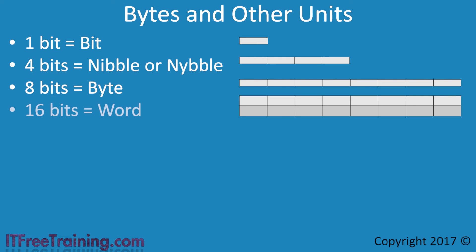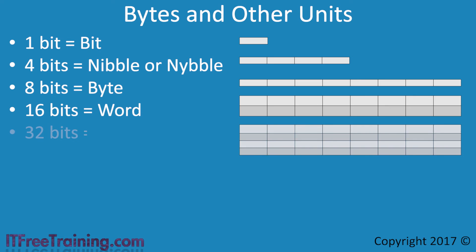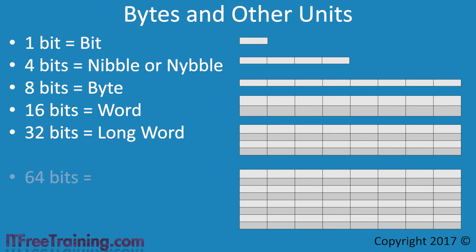The next data type is a word, which is 16 bits or 2 bytes. Sometimes you will see this in networking, but not too often. The next type is long word, which is 4 bytes or 2 words. Since it is 2 words, it is sometimes referred to as a double word. With IPv4, you come across this data type since IPv4 addresses are 32 bits long. The last data type is 64 bits, known as a very long word, also referred to as a quad word. Data types of this size you will come across if you use IPv6, as a 128-bit IPv6 address is often broken into two 64-bit parts.